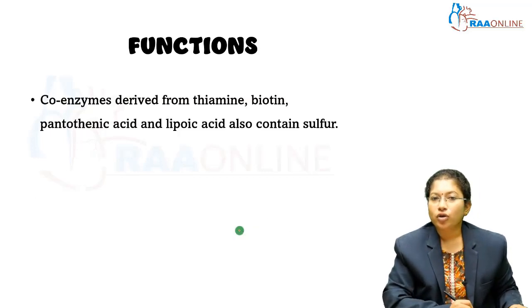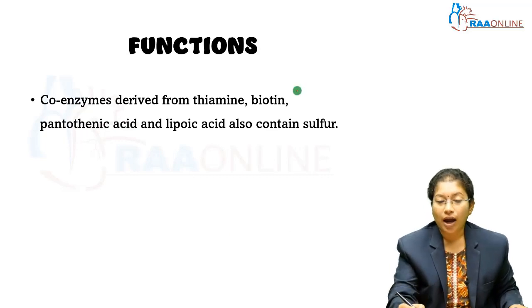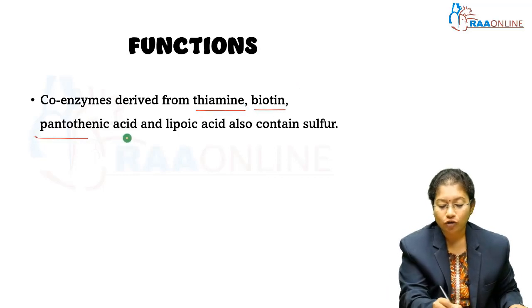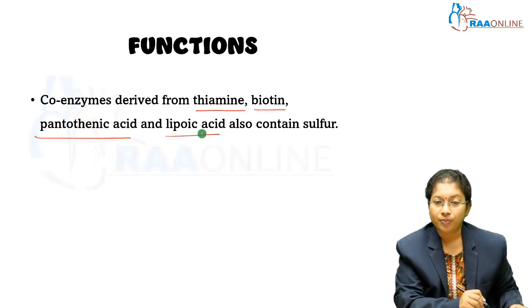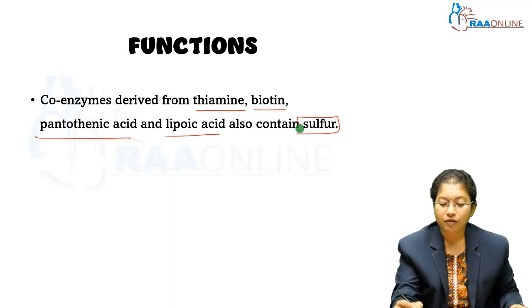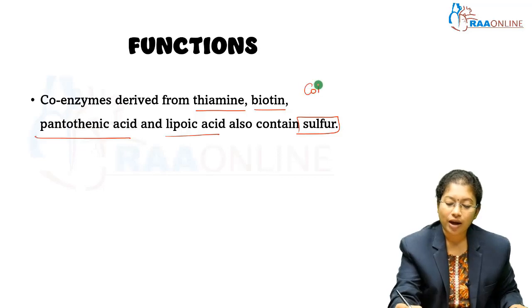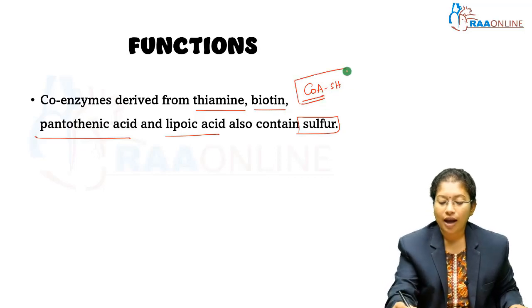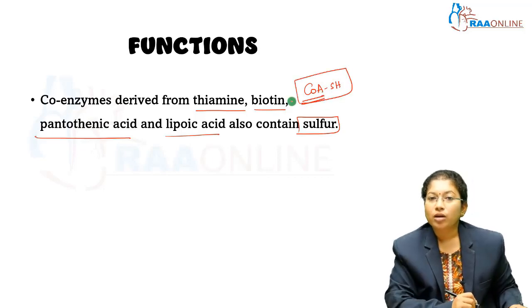Regarding coenzymes, vitamins act as coenzymes — like thiamine, biotin, pantothenic acid, and lipoic acid. When they form the coenzyme structure, they contain sulphur. For example, coenzyme A is derived from pantothenic acid and forms the active pantothenic acid coenzyme.